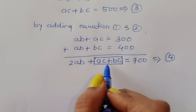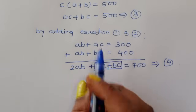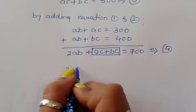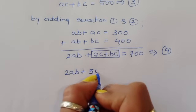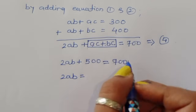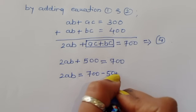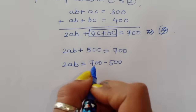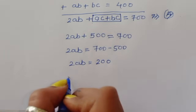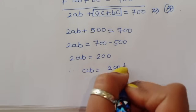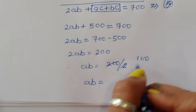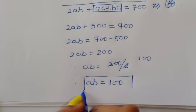But from equation 3, AC plus BC is equal to 500. So substituting: 2AB plus 500 is equal to 700. Therefore, 2AB is equal to 700 minus 500, which is 200. So AB is equal to 200 divided by 2, and the value of AB is equal to 100.